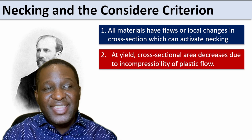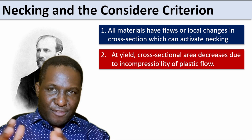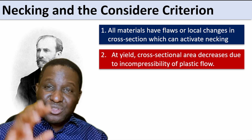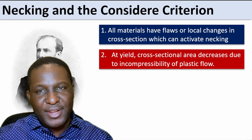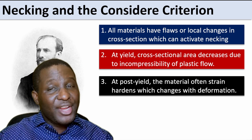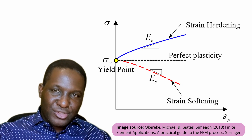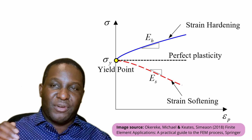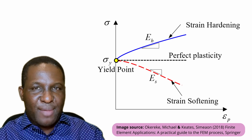The second criterion is that at yield, the cross-sectional area decreases due to incompressibility of plastic flow within the material — so necking has to occur somewhere around yield, and without the material yielding you wouldn't see necking. The third criterion is that in the post-yield behavior, three things can happen: strain softening, a plateau stress, or strain hardening. Depending on the interplay of these three, necking can also form.